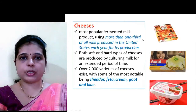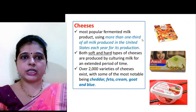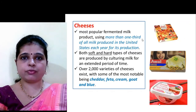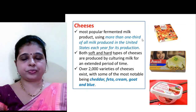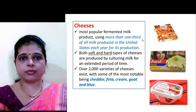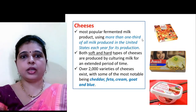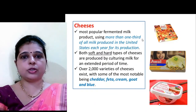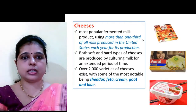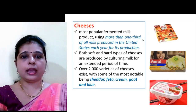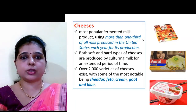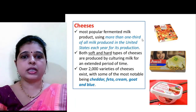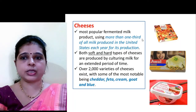Cheese is the most popular fermented milk product. In the USA, one third of milk production goes into making cheese. There are mainly two types of cheese: soft and hard. Over 2,000 varieties of cheeses are available, with some of the most notable being cheddar, feta, cream, goat, and blue.